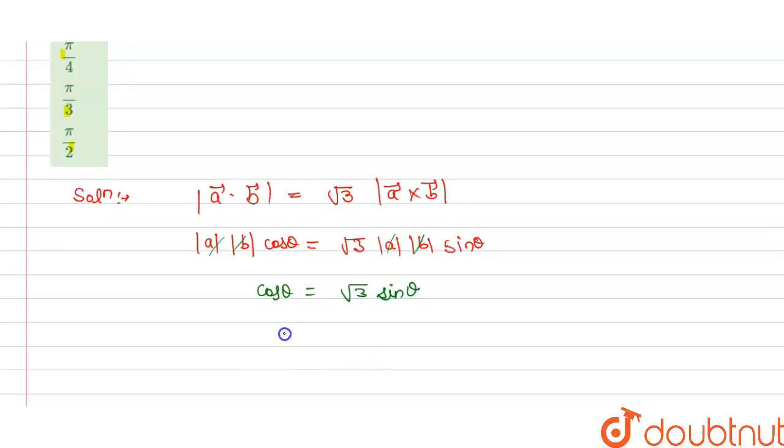Or we can say that cos theta divided by sine theta is cot theta, and this is equals to under root 3.